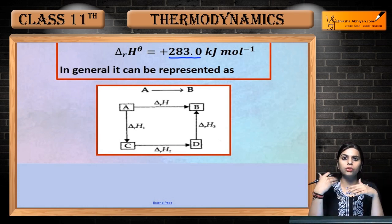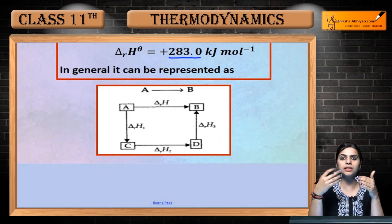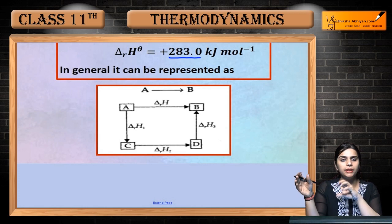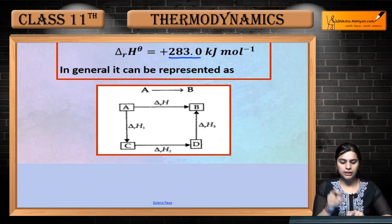But there will be some other intermediate steps with different enthalpies. So what will the total enthalpy be? You will add the enthalpy of each step.